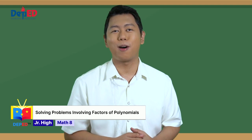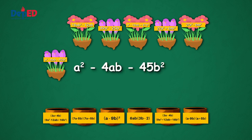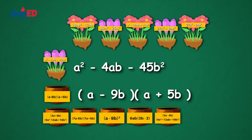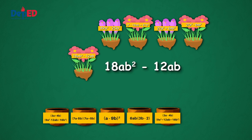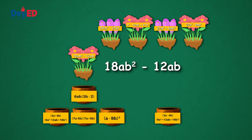Match the following polynomials to their respective factored form by placing the flowers on the correct pots. Let us start with this one: A squared minus 4AB minus 45B squared. What is its factored form? The answer is the quantity A minus 9B times the quantity A plus 5B. What we factored is a general trinomial. Next, factor 18AB squared minus 12AB. It is 6AB times the quantity 3B minus 2. We factored this polynomial by getting the greatest common monomial factor.